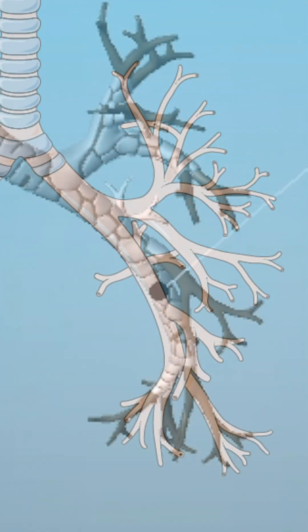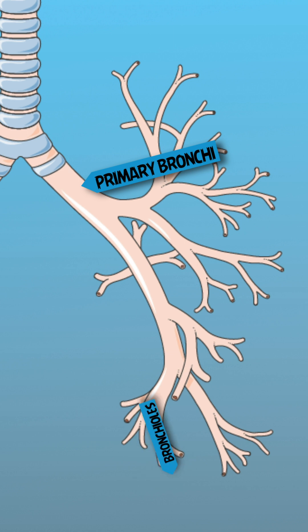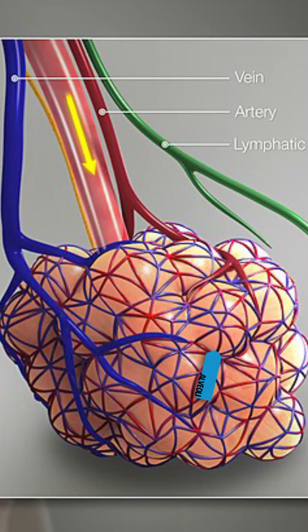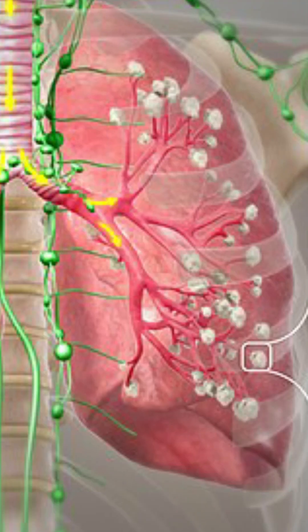Anatomy of lungs is very similar to a tree. They start as one large structure called primary bronchi that branches into a bunch of smaller formations named bronchioles. Bronchioles lead to the key structure of the lungs, alveoli. The average human has 500 million alveoli in lungs.